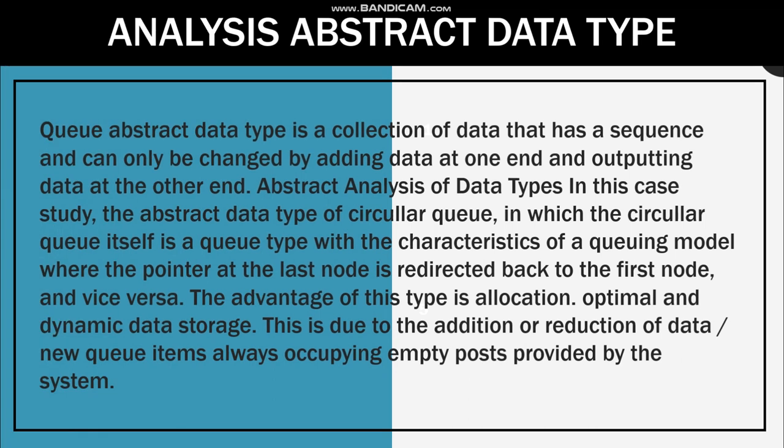The queue abstract data type is a collection of data that has a sequence and can only be changed by adding data at one end and outputting data at the other end. In this case study, the abstract data type is the circular queue, where the pointer at the last node is redirected back to the first node and vice versa. The advantage of this type is optimal and dynamic data storage, since new queue items always occupy empty positions provided by the system.